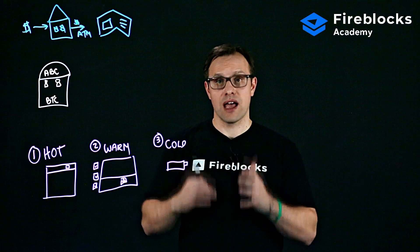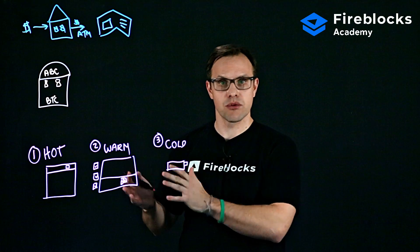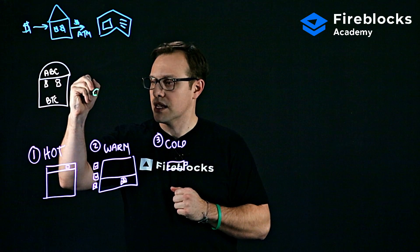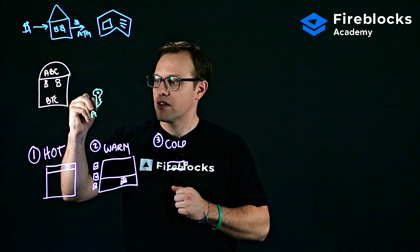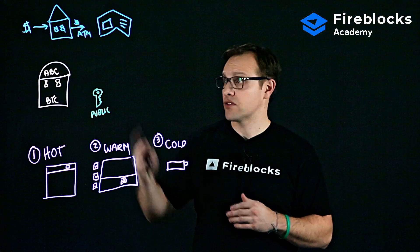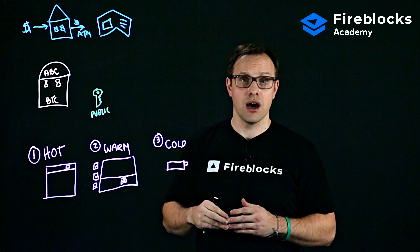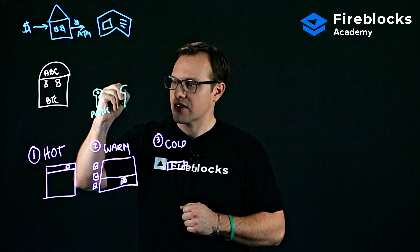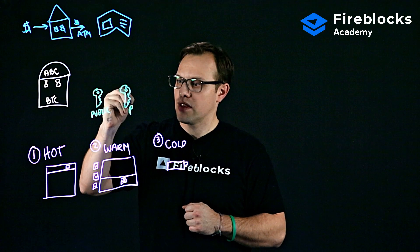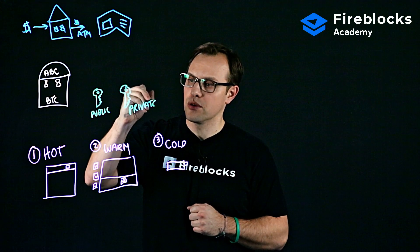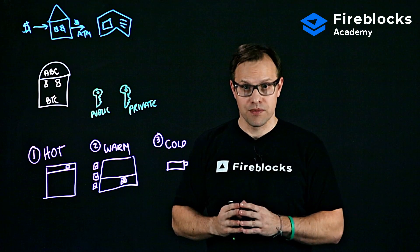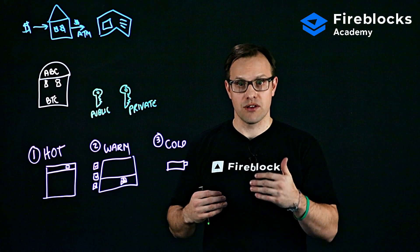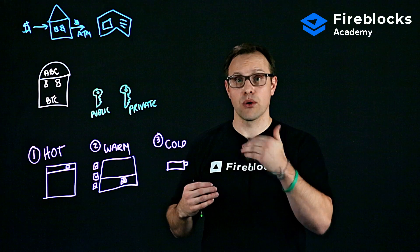To actually take assets out of a digital asset wallet and transact with them, we need to use our public and private keys. A public key is exactly that — a key that is known or available to the public. Anyone can know this. Your actual wallet address is based off the address of your public key. Your private key is a completely different story — it is 100% just for you. Your private key is extremely important because when you initiate a transaction, you'll be asked to authenticate it, which means you have to use your private key to sign or authenticate that transaction.